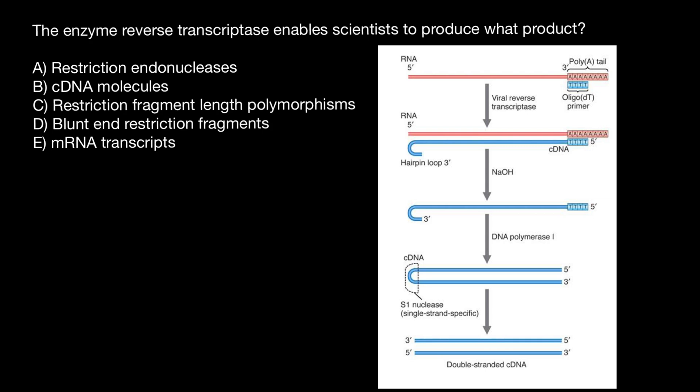And now you see, we can choose an answer, which is going to be answer B. The enzyme reverse transcriptase enables scientists to produce cDNA molecules. And now you know how such molecules are produced and the purpose.